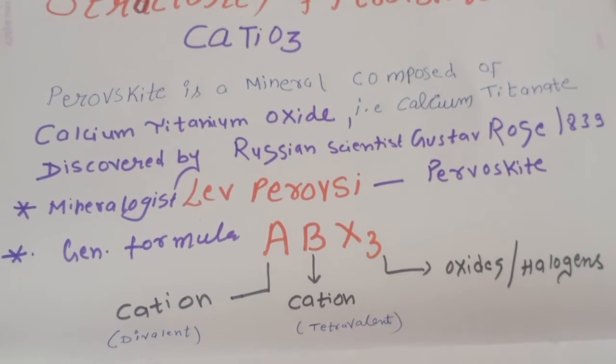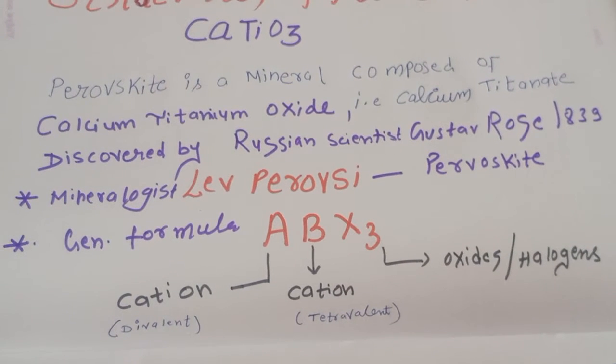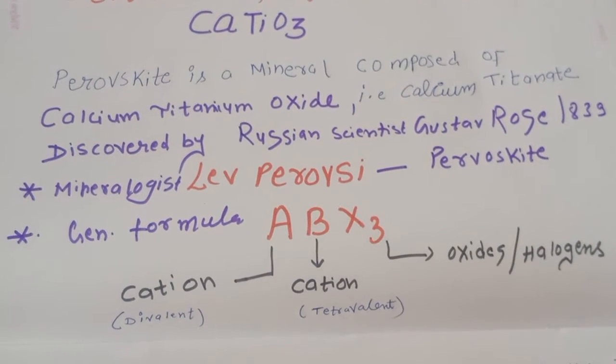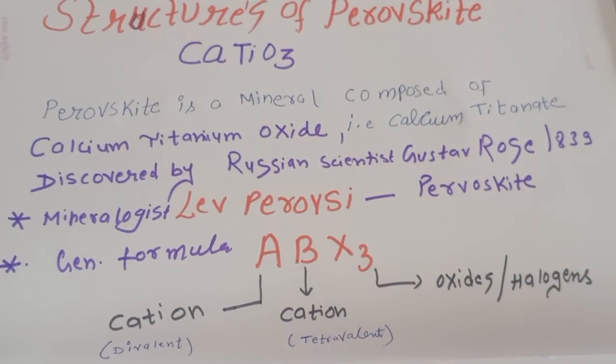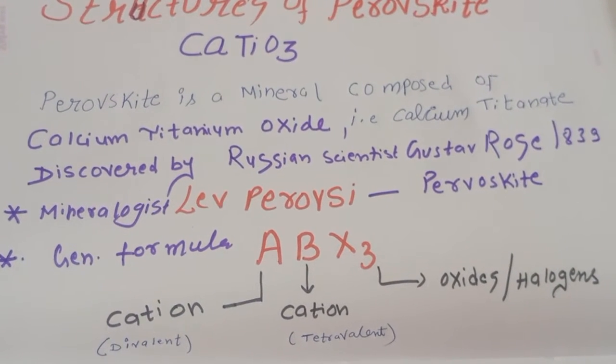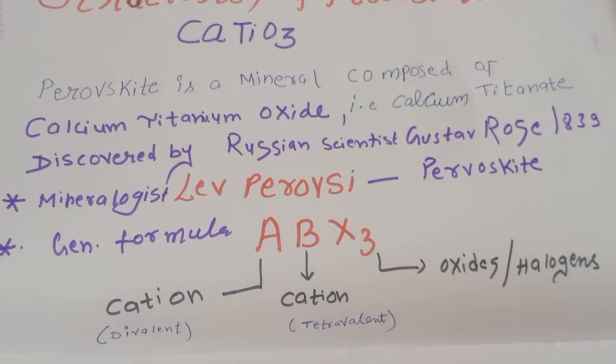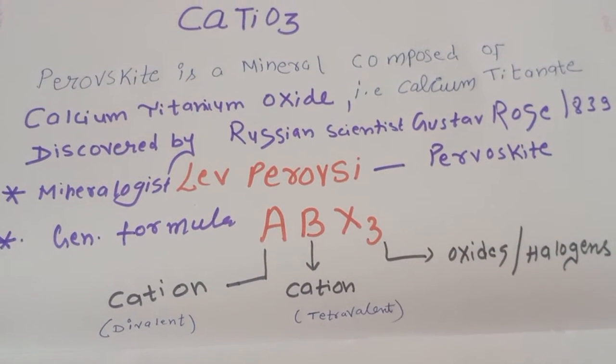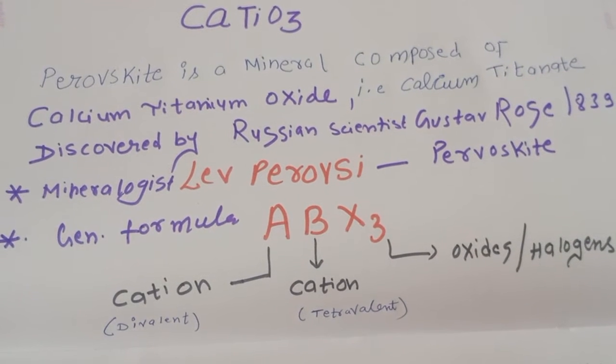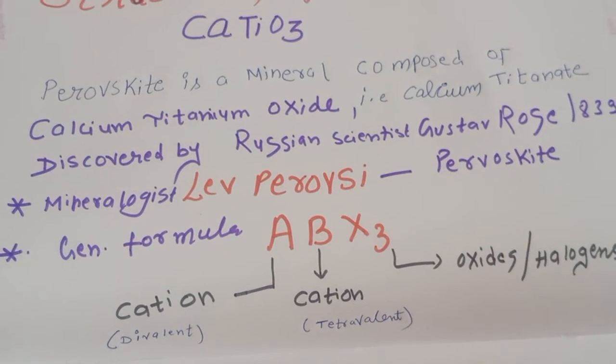It is discovered by the Russian scientist Gustav Rose in 1839, but later on so much research was done by the mineralogist Lev Perovskite. That's why the name is the perovskite, because Lev Perovskite has done a lot of research, so the name is given the perovskite.